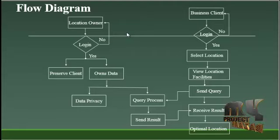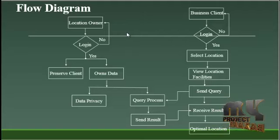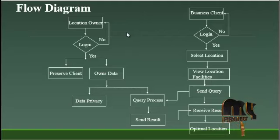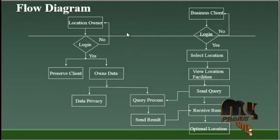After login, the client selects the location they are interested in for optimal location analysis. Here we are providing two location options: New York and Tokyo. The client selects one of these locations. Based on the selection, the facilities available in that location will be viewed — only the facility details will be shown, and no other user details will be visible to the business client.